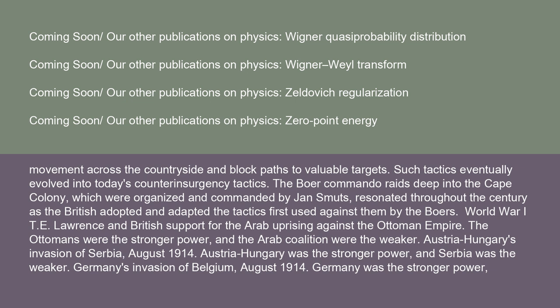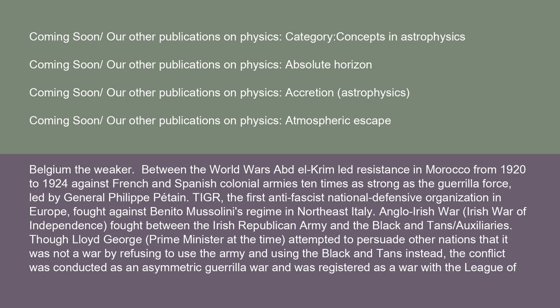World War I examples include T.E. Lawrence and British support for the Arab uprising against the Ottoman Empire — the Ottomans being the stronger power and the Arab coalition the weaker. Other examples include Austria-Hungary's invasion of Serbia in August 1914, where Austria-Hungary was the stronger power and Serbia the weaker, and Germany's invasion of Belgium in August 1914, where Germany was the stronger power and Belgium the weaker.